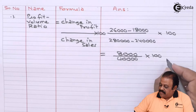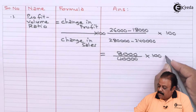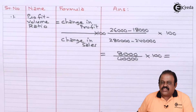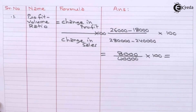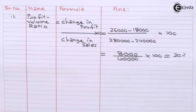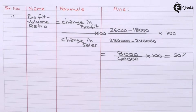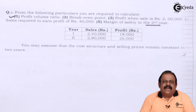After solving this, we get the PV ratio as 20%. So PV ratio is 20%.